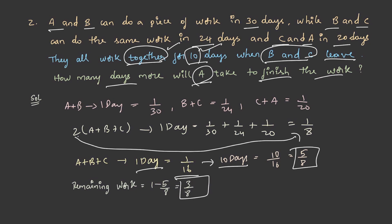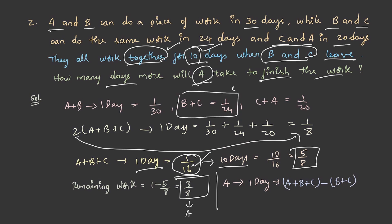To find A's one-day work, we subtract B plus C's work from the total. A plus B plus C's one-day work is 1/16 and B plus C's one-day work is 1/24. Therefore, 1/16 minus 1/24 equals 1/48. This is the work done by A alone in one day.